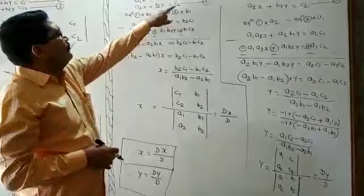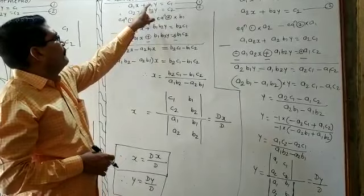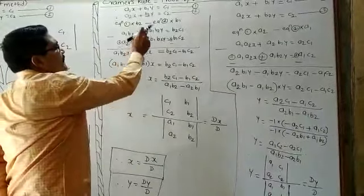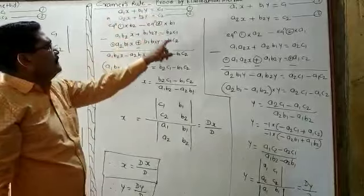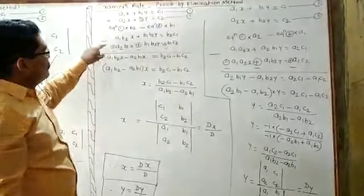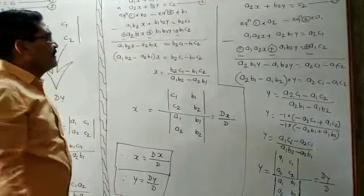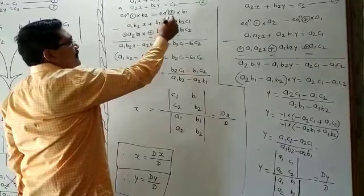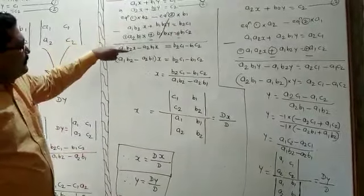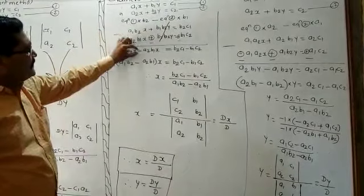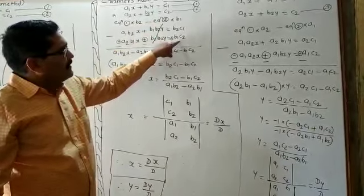Now give a minus sign to the second equation, changing all its signs. The b1·b2·y terms are like terms with opposite signs, so they cancel. After cancellation you are left with: a1·b2·x − a2·b1·x = c1·b2 − c2·b1.